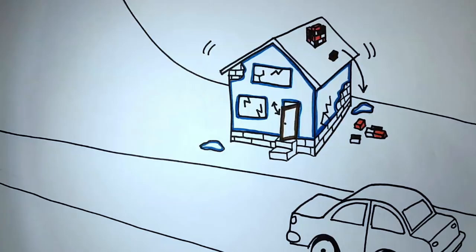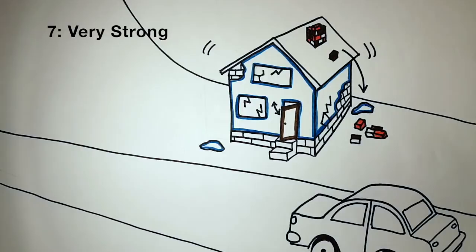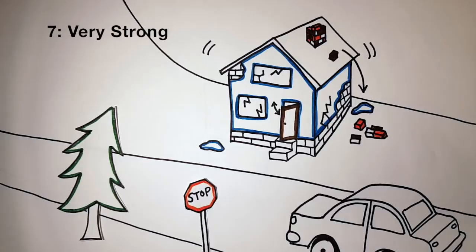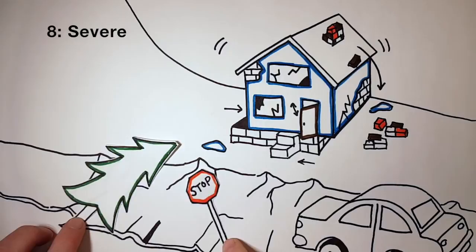Level 7: Very strong shaking will cause serious damage in old brick buildings. Plaster and brick chimneys might fall. Drivers will notice the shaking and stop their cars. Level 8: Severe shaking will cause heavy furniture to fall over, homes to shift on their foundations, and cracks to form in the ground.